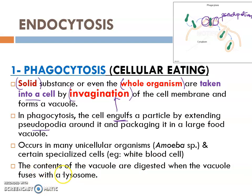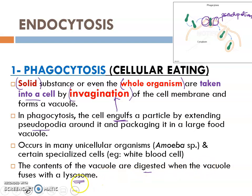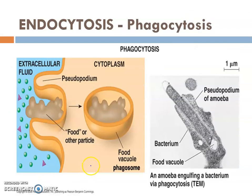How are the contents or particles in the food vacuole going to be digested? They are digested once the vesicle fuses together with the lysosome. The lysosome contains lytic enzymes. Once the vesicle combines or fuses together with the lysosome, the lytic enzymes digest the contents of the vacuole. These figures show the phagocytosis process.